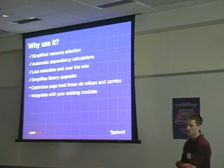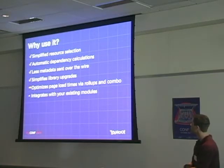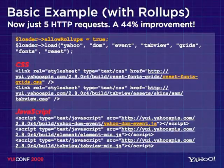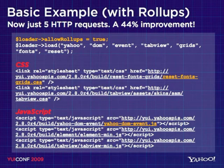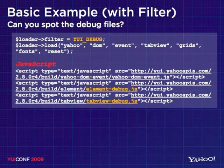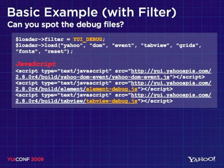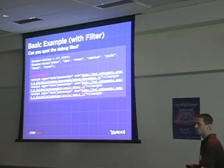Let's get into how it helps optimize page load times via rollup files, aggregate files, and combo handling. With allow_rollups set to true — which is the default — loading the same set of modules, we go from nine HTTP requests down to five: a 44% improvement by adding just this one flag. You can see we get the aggregate files for reset-font-grid and yahoo-dom-event. With the filter option, JavaScript files have debug versions available — for example, element and tab view will generate debug files, most useful in staging or development environments.